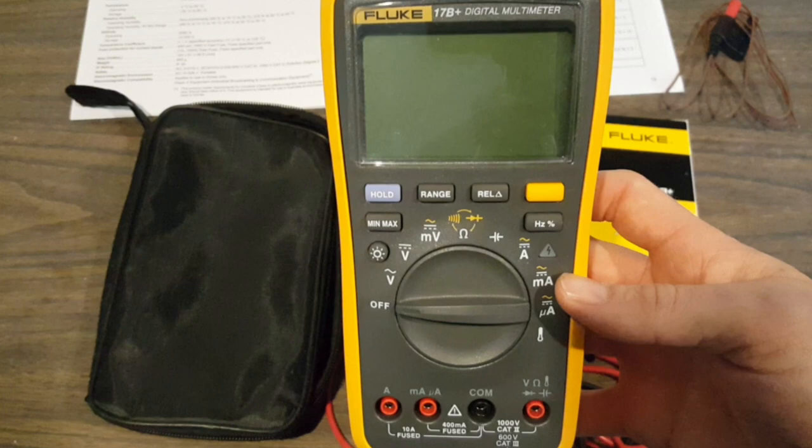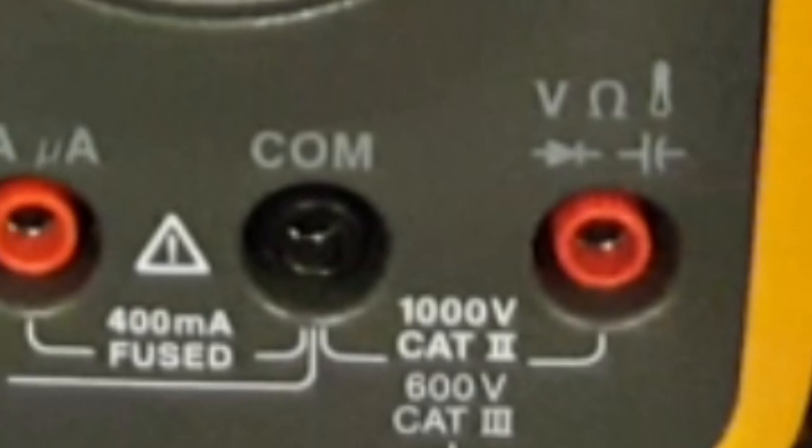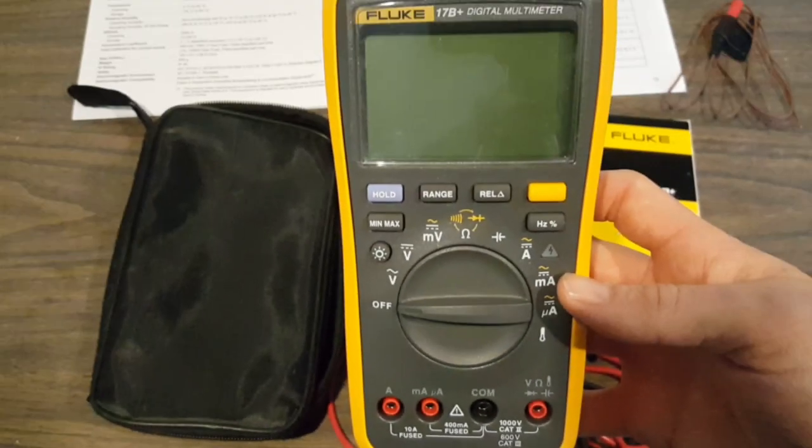Multimeters are labeled with a category rating. You'll see something like CAT 2 or CAT 3 on the meter and this indicates the meter's ability to safely handle a voltage spike.